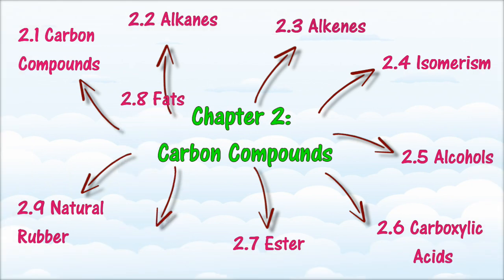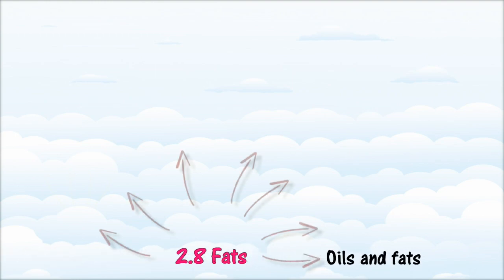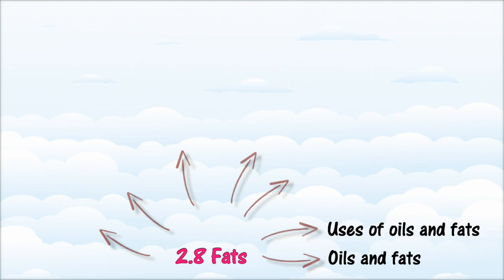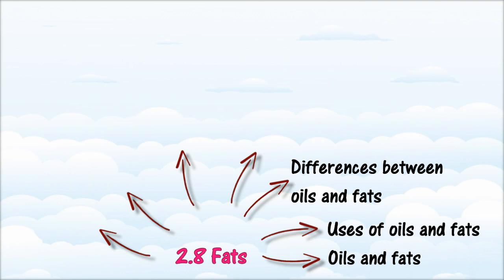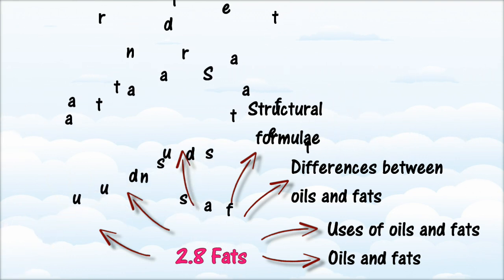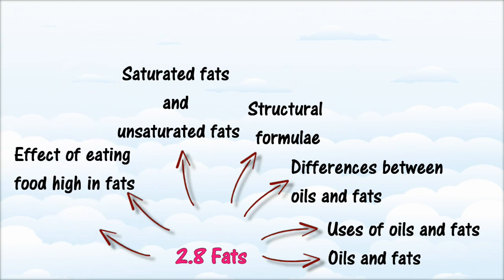In Section 2.8, we will learn about Fats. At the end of this section, you should be able to: state what oils are and state what fats are; state the importance of oils and fats for body processes; state the sources of oils and fats and list the uses of oils and fats; state the differences between oils and fats; identify structural formulae for fat molecules of certain fatty acids; state what saturated fats are and state what unsaturated fats are; compare and contrast saturated and unsaturated fats; describe the process of changing unsaturated fats to saturated fats; describe the effects of eating food high in fats on health; describe the industrial extraction of palm oil; and justify the use of palm oil in food production.